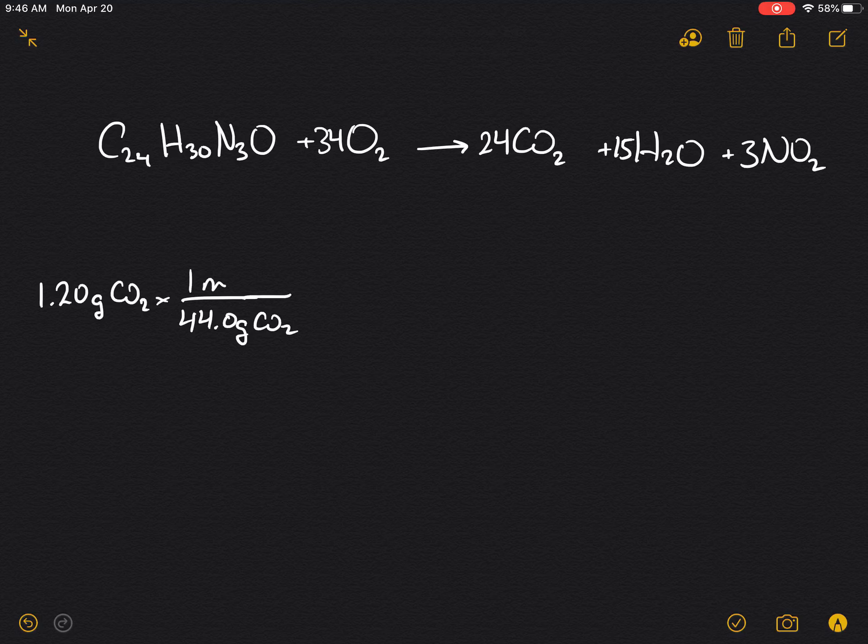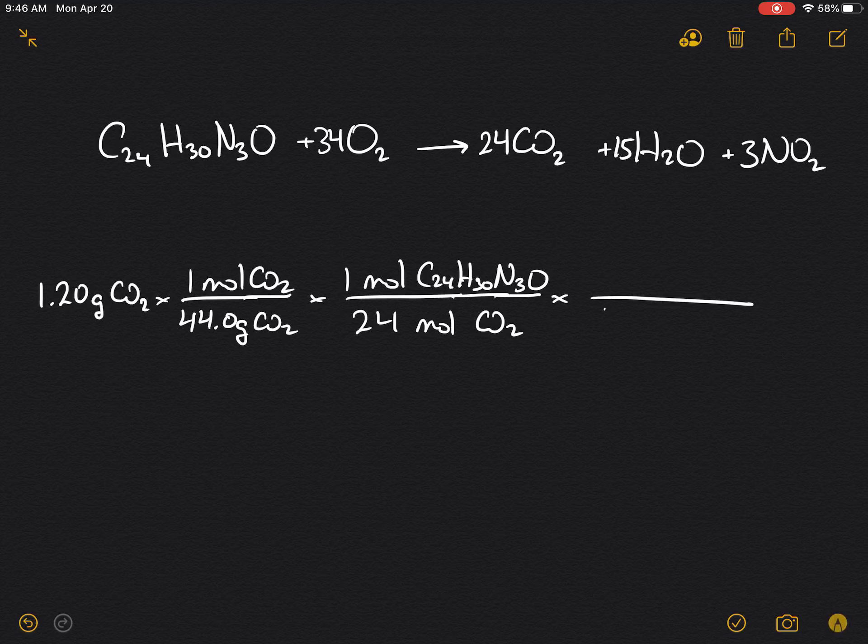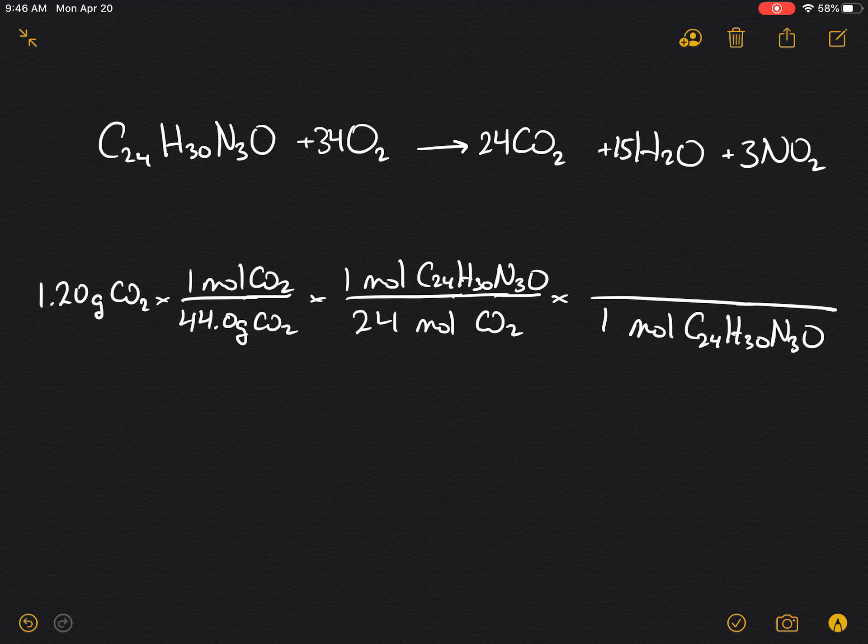44 grams of CO2 per 1 mole. Our stoichiometry here would be 24 moles of CO2 per 1 mole of the C24H30N3O compound. And the molar mass, 1 mole C24H30N3O, would be equal to 376.0 grams per mole.